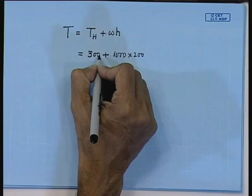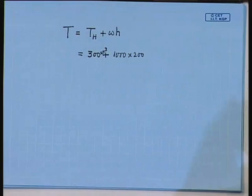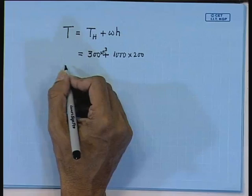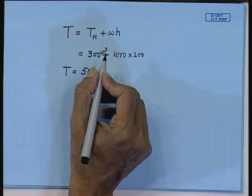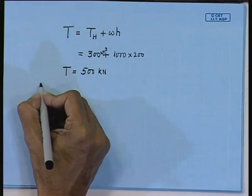So, T — how much are we getting? T is coming as 500 kilo Newtons. Now the easiest part of the problem is C: find out the environmental force to move anchor A.